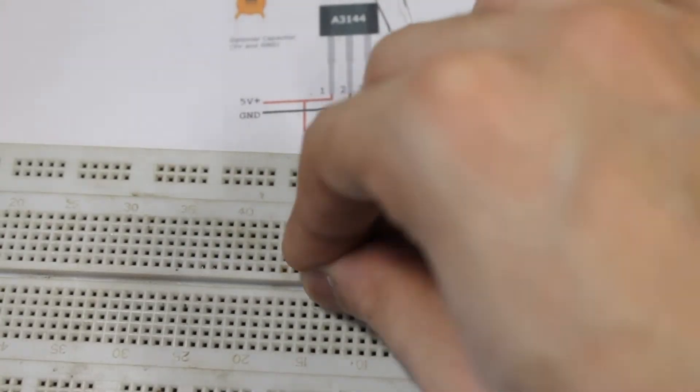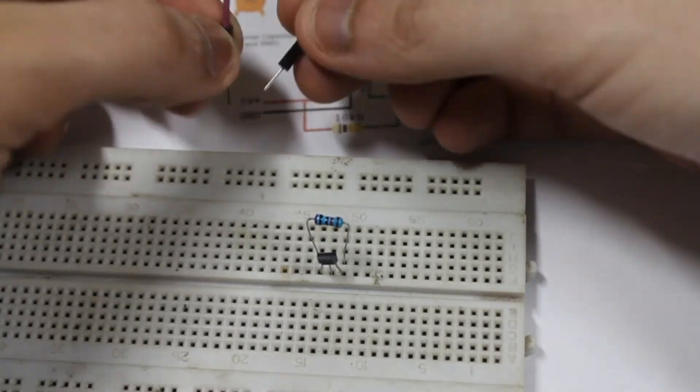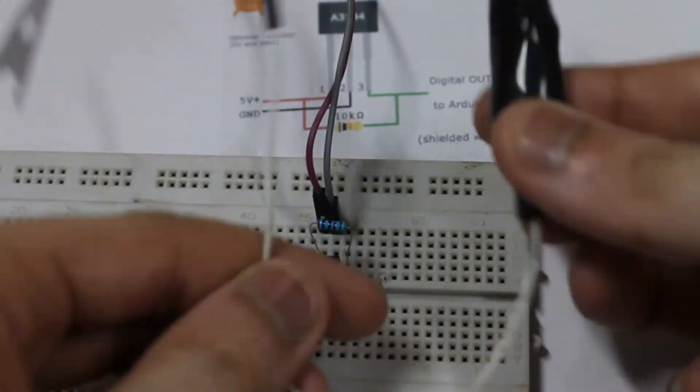Here is the sensor itself and here is the pull-up resistor. Next comes the VCC and the ground lines. I also designed some special connectors to connect the sensor to the multimeter.